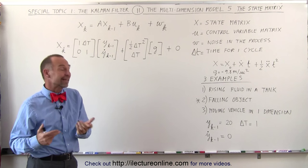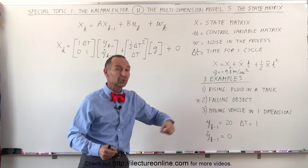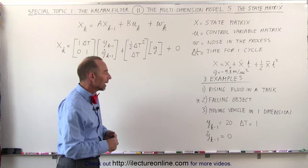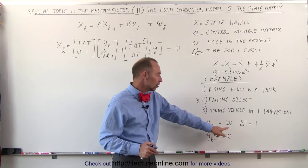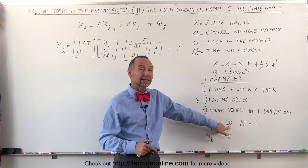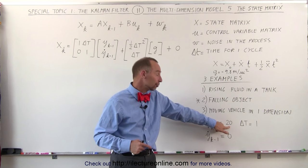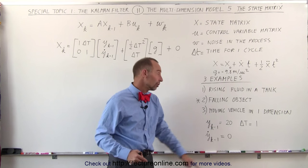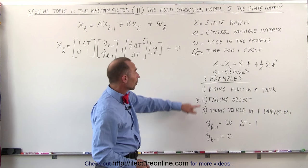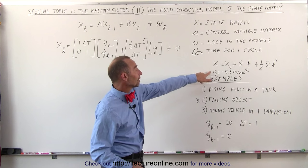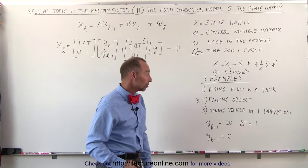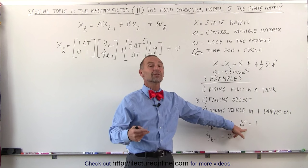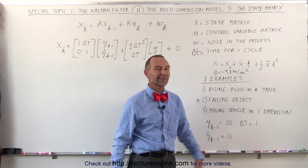This is the second example where we're dealing with a falling object. Let's assume that the initial conditions are that it starts at a height of 20 meters, its initial velocity in the y direction is zero, the acceleration due to gravity is minus 9.8 meters per second squared, and the delta T interval is one second.